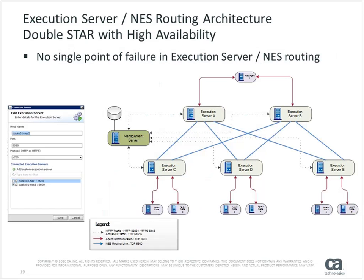The next level is making the execution server network itself resilient — this is the double star. In a single star you have the central execution server and lower secondary ones. With double star, we add a second central execution server so we can lose either one without stopping deployments. In the event that execution server B goes offline, the agent can still send data through the alternate path. We basically remove the single point of failure within this architecture.